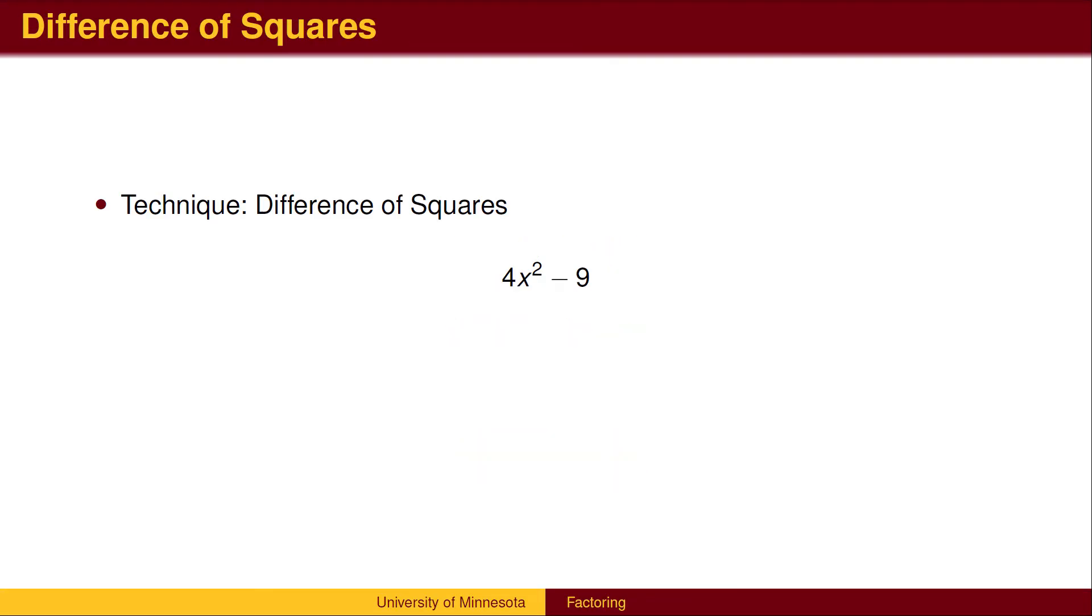We will now start to undo the multiplication performed by the FOIL method. The first technique is the difference of squares. Typically, the FOIL method will produce 4 terms. The difference of squares has just 2 terms. The reason is that the two middle terms cancelled. This happens when the two factors are identical, except for the plus or minus sign.